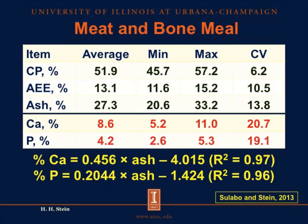Looking at some data from meat and bone meal, we can see that the concentration of crude protein, acid hydrolyzed ether extract (fat), and ash is on average 51.9% crude protein, 13.1% fat, and 27.3% ash. There is some variation among sources, with ash varying from 20.6% up to 33.2%. The variability expressed as a coefficient of variance is greater for ash than for crude protein and fat. In sources with a high concentration of ash, we also tend to have high concentrations of calcium and phosphorus.